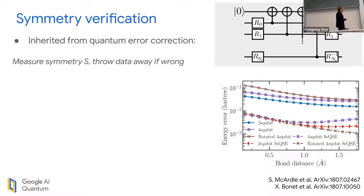Suppose I have a circuit and I'm preparing a state, and I know it satisfies some symmetry S - I have an operator S, and I know that psi is an eigenstate of this operator. The simple error mitigation technique is I measure the symmetry S, and I don't have the resources to correct my state if it's wrong. Instead, I'm just going to throw the data away.